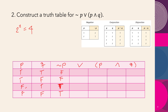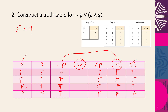Next, taking the inner part: we copy p as T, T, F, F, and copy q as T, F, T, F. The conjunction of p and q: both true is true; true and false is false; false and true is false; false and false is false.